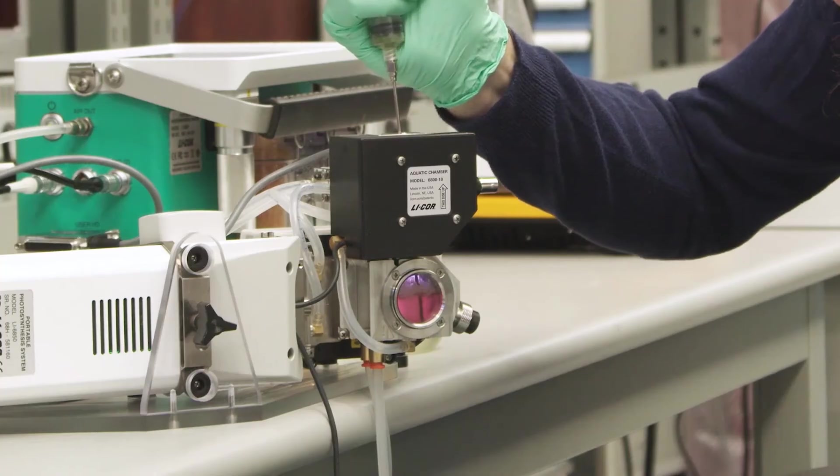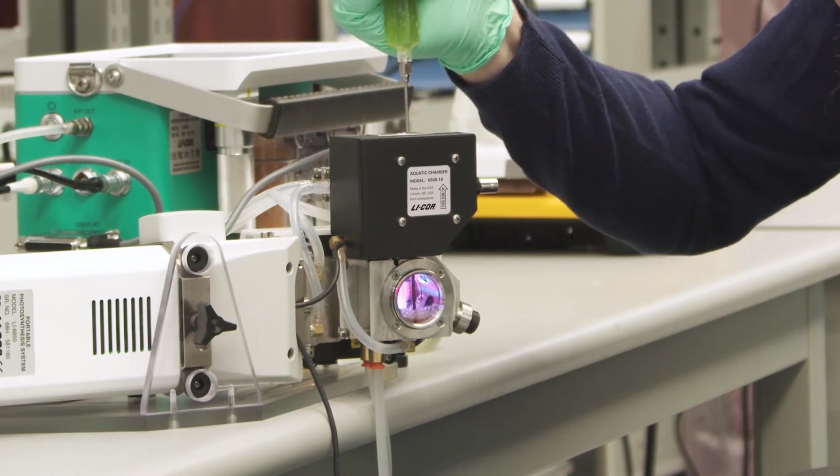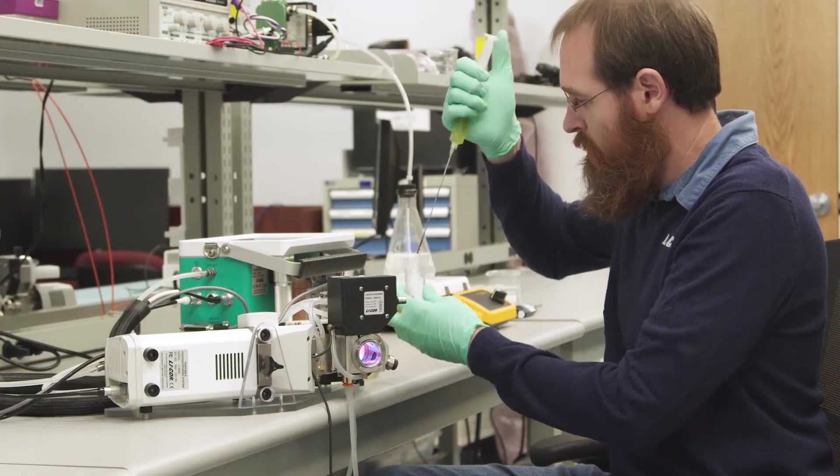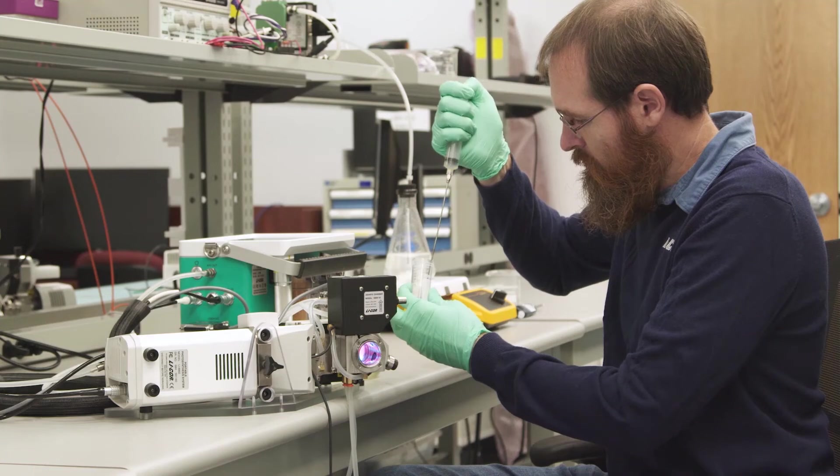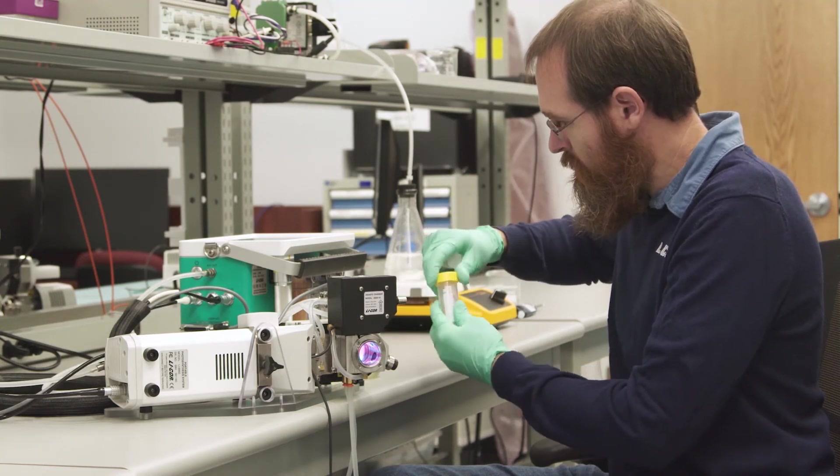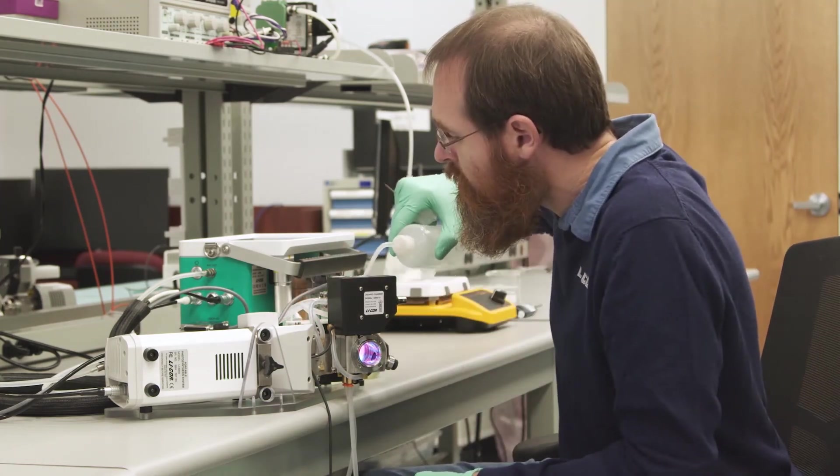Now that the curve is finished, we're going to remove the cells from the chamber. I'm going to save some of these so that I can calculate a cell density for this measurement. Pull them out with the syringe and then I have a bottle of deionized water here that we're going to use to triple rinse the chamber and that'll get any residual sample material out.